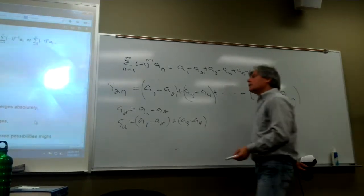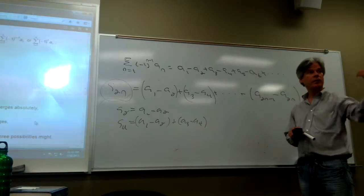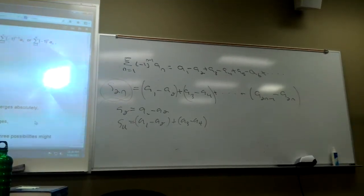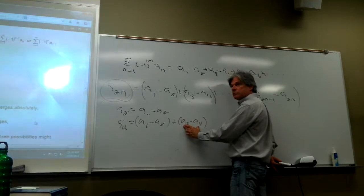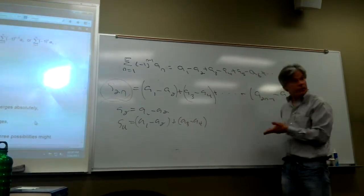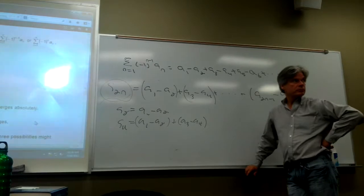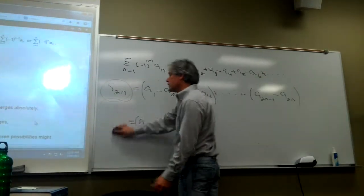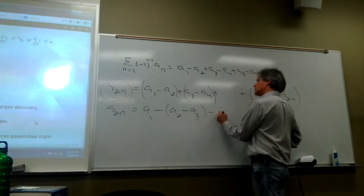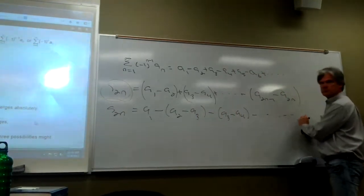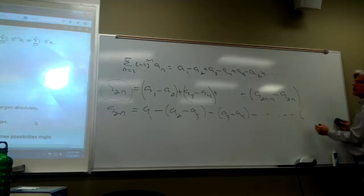So S sub 2n can be interpreted as the nth term of a sequence of partial sums. I made it S sub 2n because I'm grouping them together in pairs. Would you agree that each grouped term is positive? Since A sub 1 is bigger than A sub 2 from our assumption, each parenthetical grouping is positive. So the sequence of partial sums is monotonic — it's increasing.